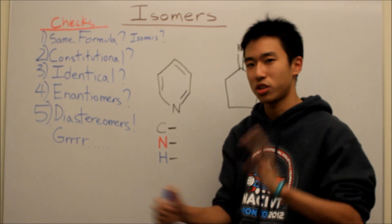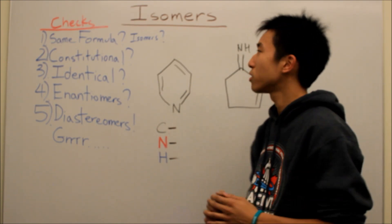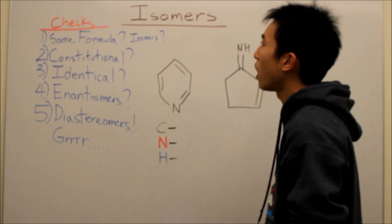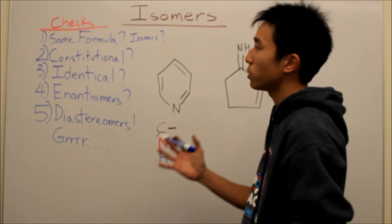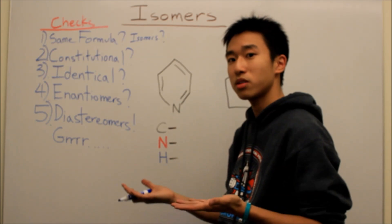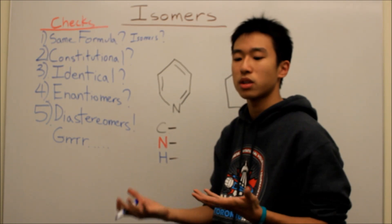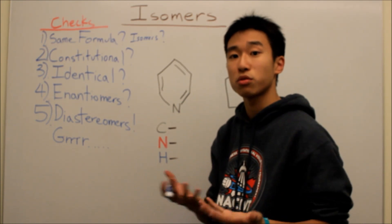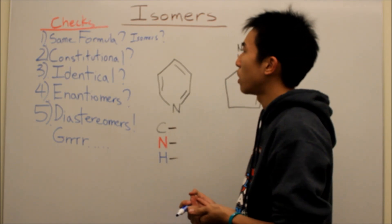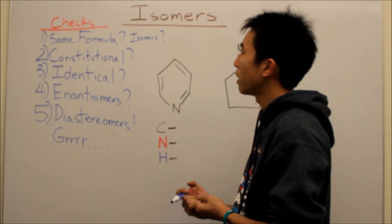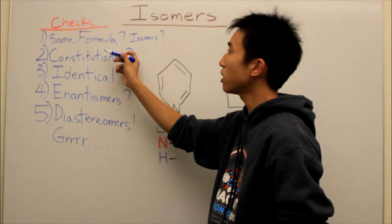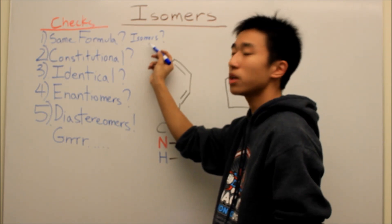Because a lot of people have trouble differentiating them, when you do isomer problems, you want to go through this checklist first. The first thing you want to do is the same formula check to make sure that there are isomers in the first place, because isomers are molecules that have the same chemical formula but different structural arrangements. So the first check is the same formula check.